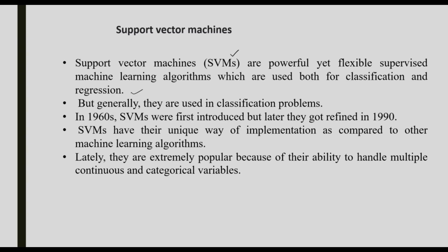For classification, we are using a flexible algorithm mainly based on machine learning — support vector machines. For regression and level prediction methods, we mainly use it for classification. In 1960, SVMs were first introduced, but later they got refined in 1990. SVMs have their unique way of implementation as compared to other machine learning algorithms.